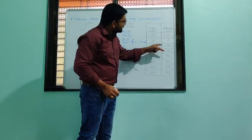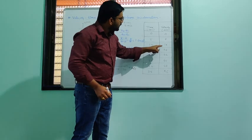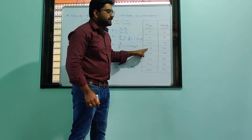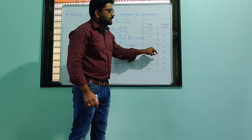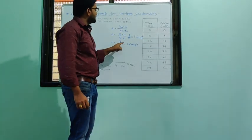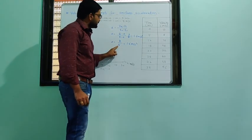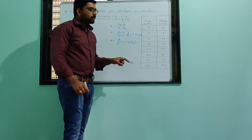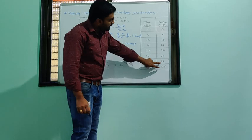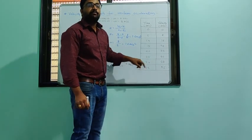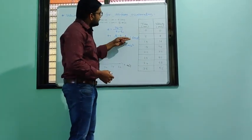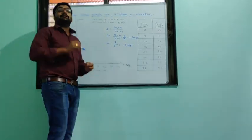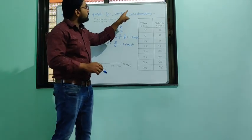Similarly, for the third interval — at 10 seconds velocity is 16 m/s, and at 15 seconds it is 24 m/s. So acceleration = (24 − 16) / (15 − 10) = 8/5 = 1.6 m/s². So such an acceleration is called uniform acceleration.